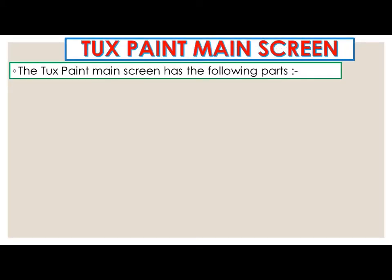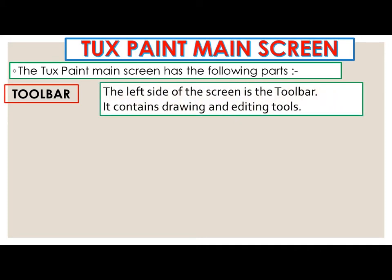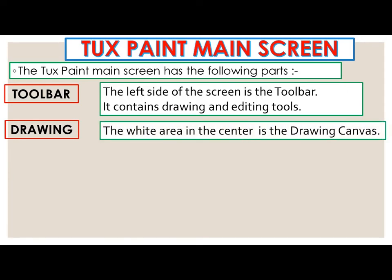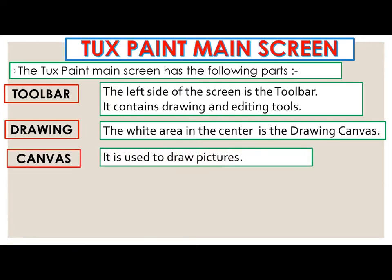Now let us see the Tux Paint main screen parts in detail. First, the toolbar — the left side of the screen is the toolbar, and it contains drawing and editing tools. Next is the drawing canvas — the white area in the center is the drawing canvas, and it is used to draw pictures.